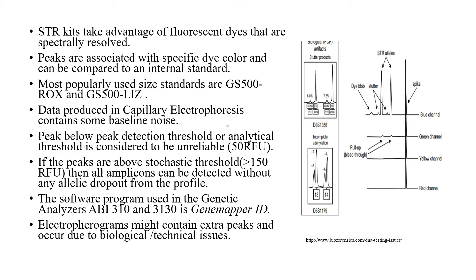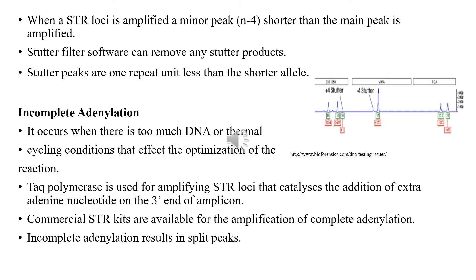When the STR loci is amplified, a minor peak shorter than the main peak is observed — these are called stutter peaks. Stutter peaks are one repeat unit less than that of a shorter allele. Stutter filter software can remove any stutter products.